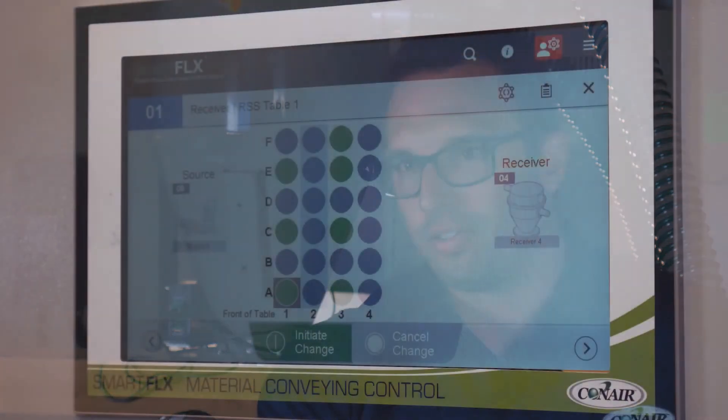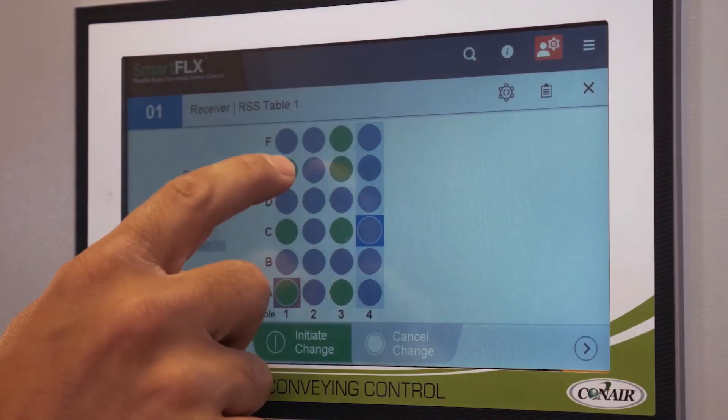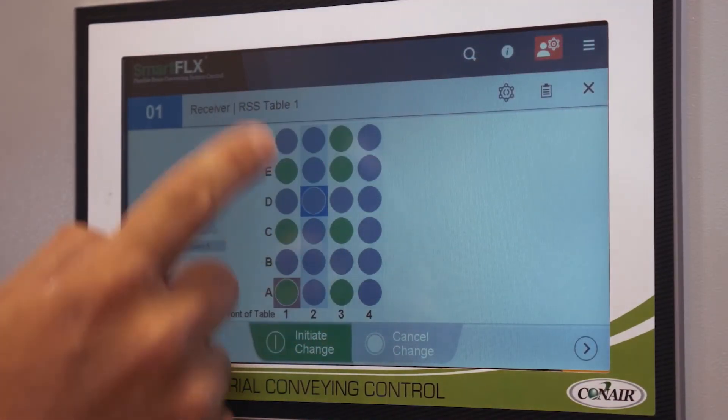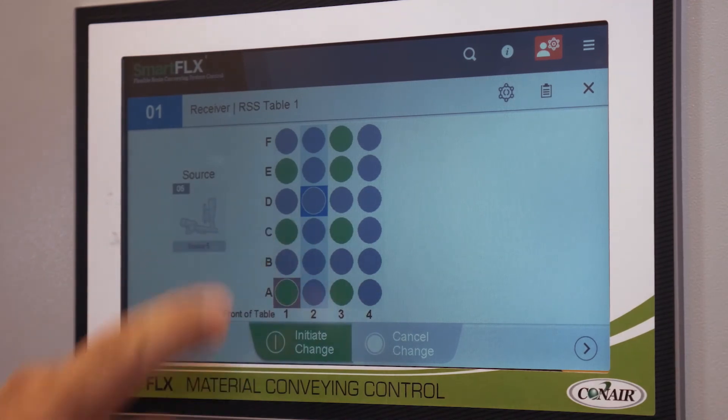Like we've talked about, the SmartFOX can manage all of the different sources, and it understands what source is associated with what receivers. If we're passing through an RFID-proofed resin selection station, we have that feedback and we understand where all the different connections are in the system.